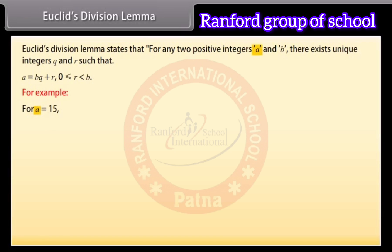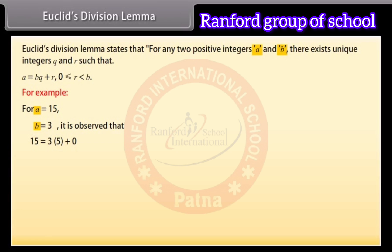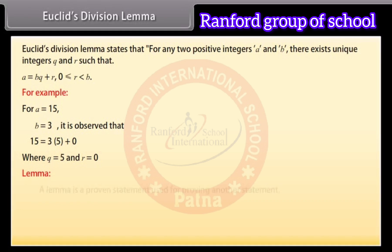For example, A is equal to 15 and B is equal to 3. It is observed that 15 is equal to 3 into 5 plus 0, where Q is equal to 5 and R is equal to 0. A lemma is a proven statement used for proving another statement.